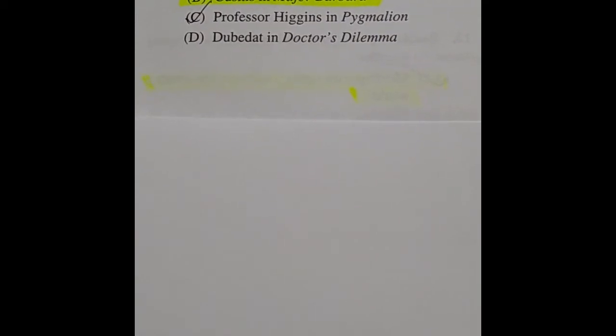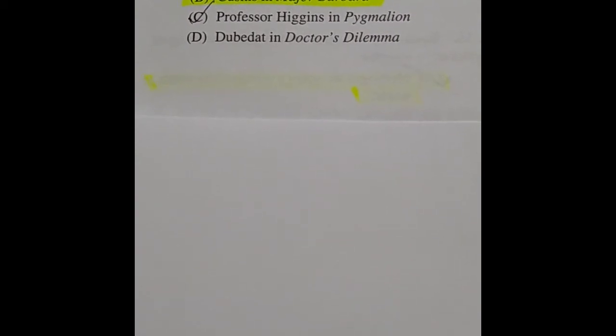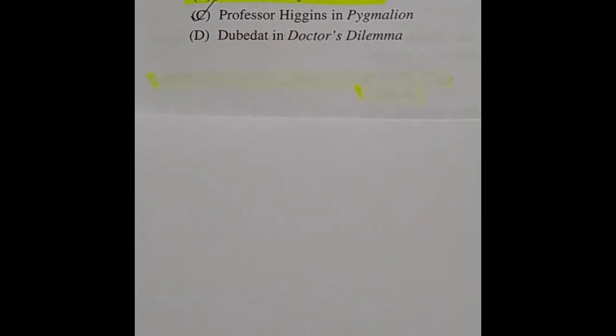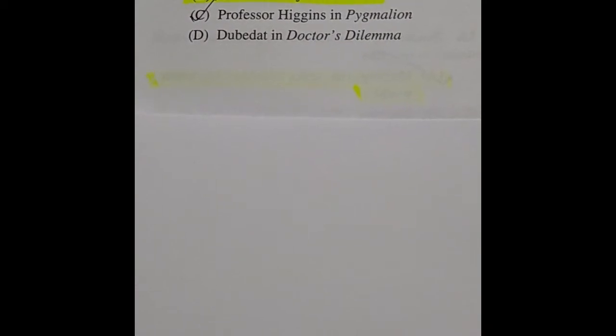Question 1: The Australian-born classical scholar Gilbert Murray is the original of — there are four options. The answer is option B: Cusins in Major Barbara.